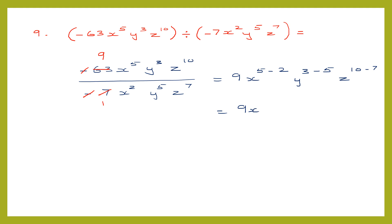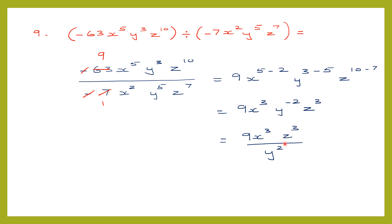We get 9, x to the power of 3, y to the power of minus 2, z to the power of 3. To make y's power positive, we move it to the denominator, so the sign of the power changes to positive. The final answer is 9 x cubed z cubed divided by y squared, which is option 3.